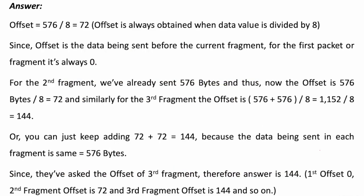The offset is calculated by dividing the data by 8. Eight is the scaling factor — we scale down by division to calculate the offset. The offset value is the data being sent before the current fragment, i.e., the data already sent to the receiver. For the first packet fragment it is always 0, because before the first packet there is nothing sent.